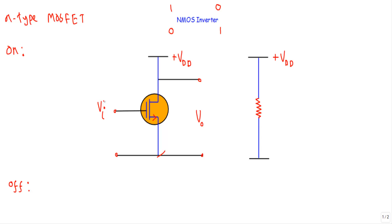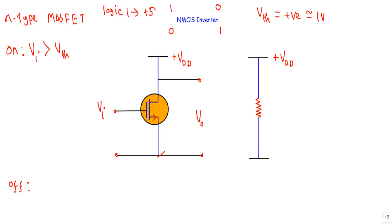Now let me talk about the ON state. The threshold voltage of an N-type MOSFET is a positive number, which should be around 1 volt. So if I apply an input voltage VI greater than the threshold voltage — for example, in NMOS logic circuits we use 5V to represent logic 1 and 0V to represent logic 0 — when VI is greater than VTH, for example VI equal to plus 5V, it is obviously greater than plus 1V.